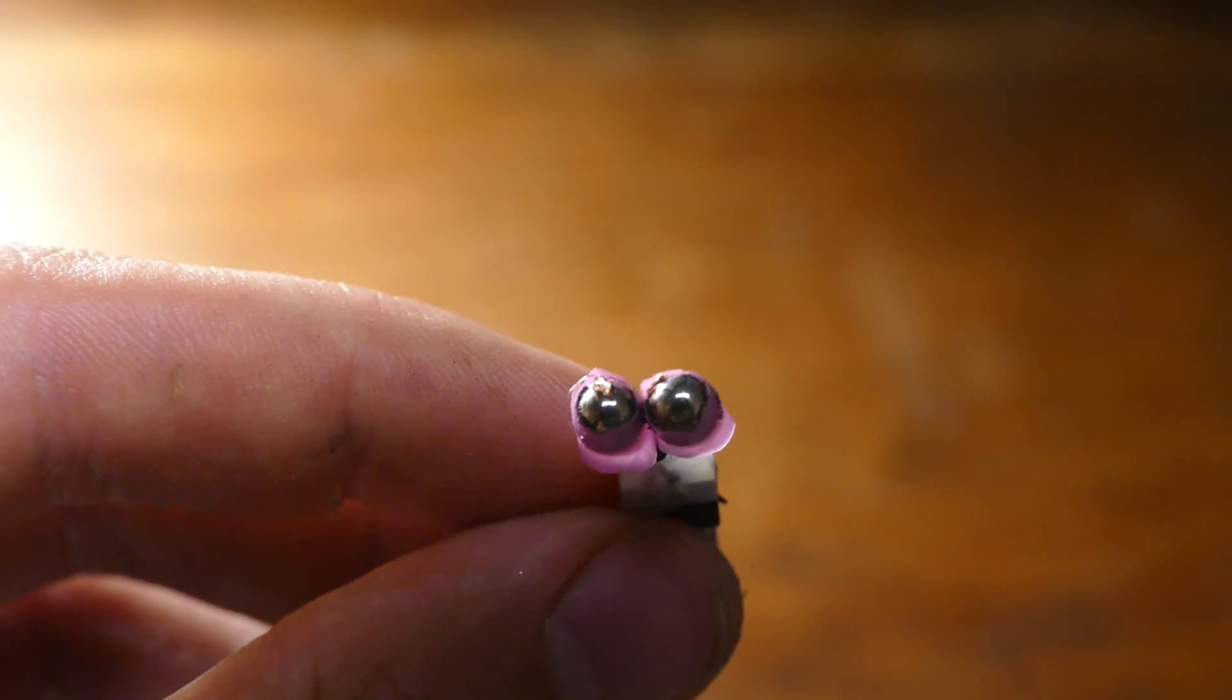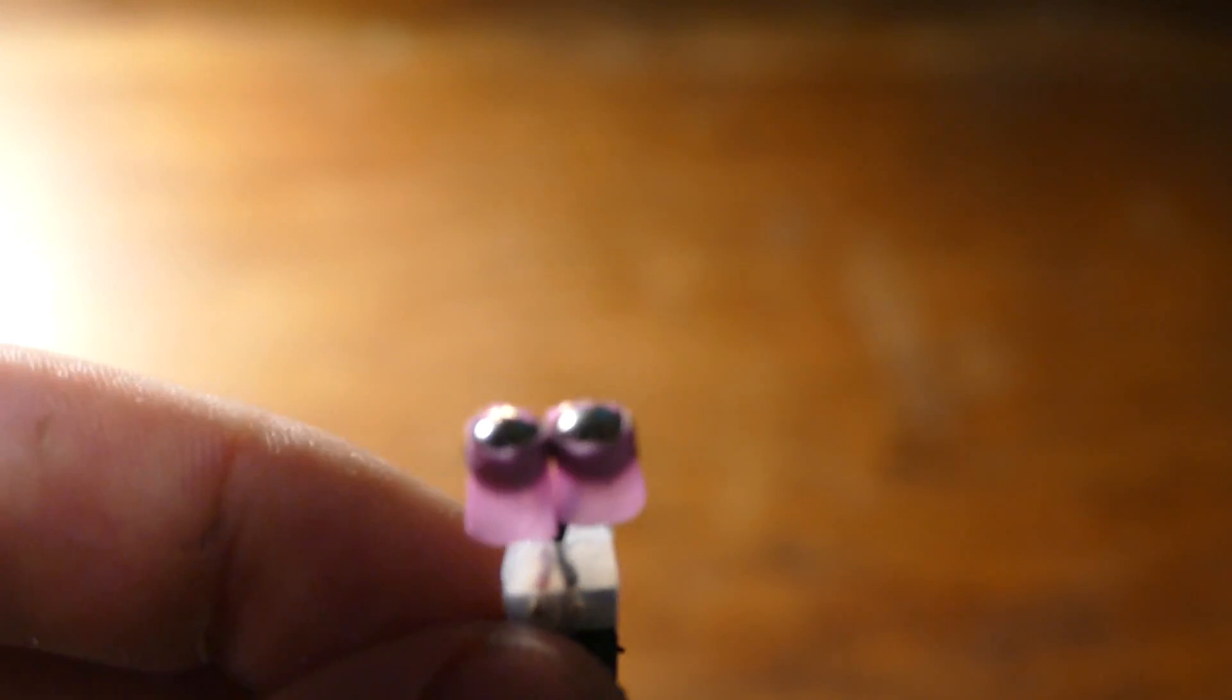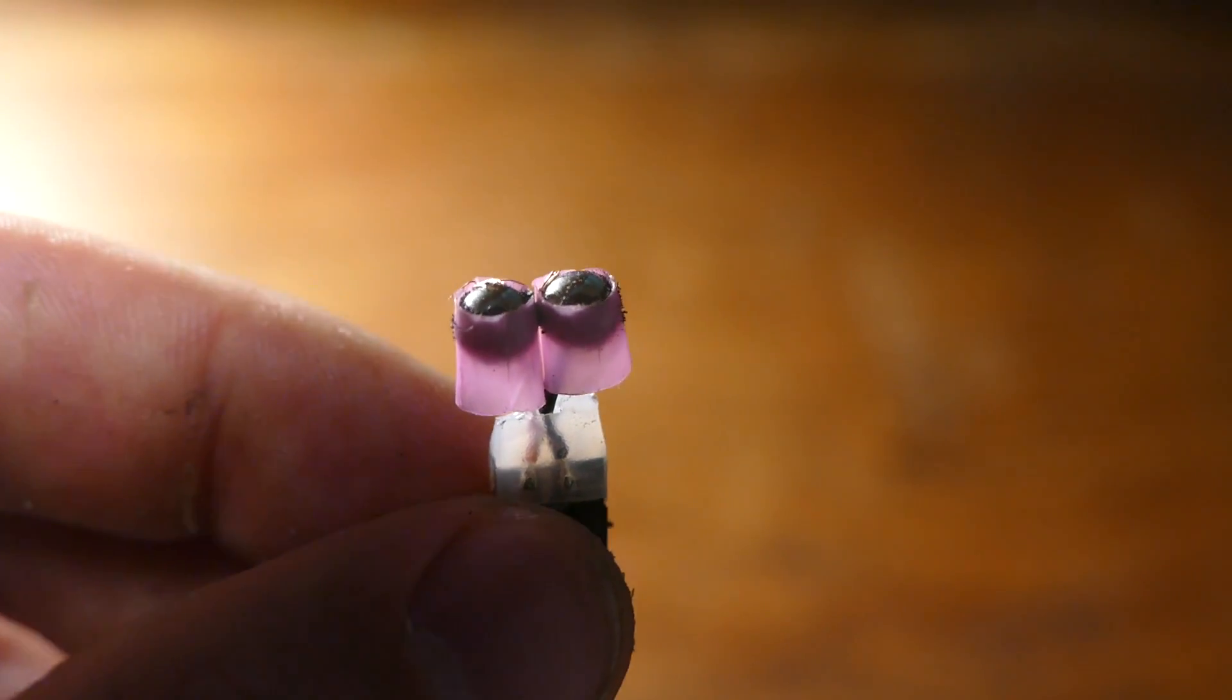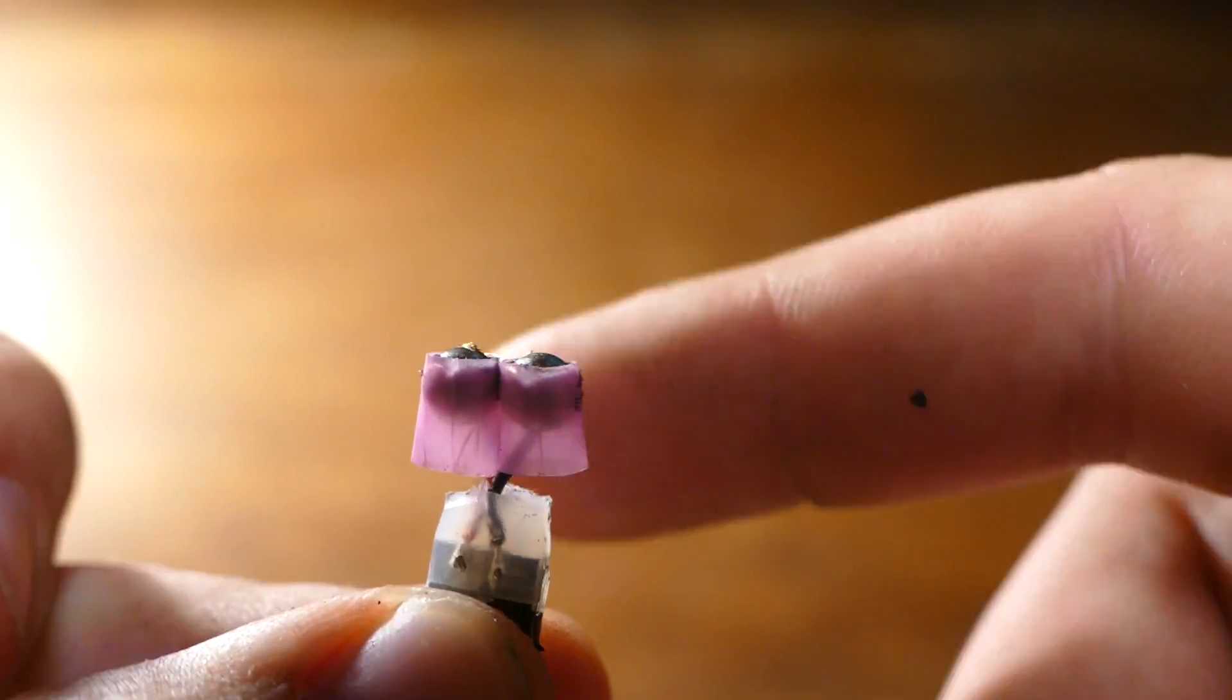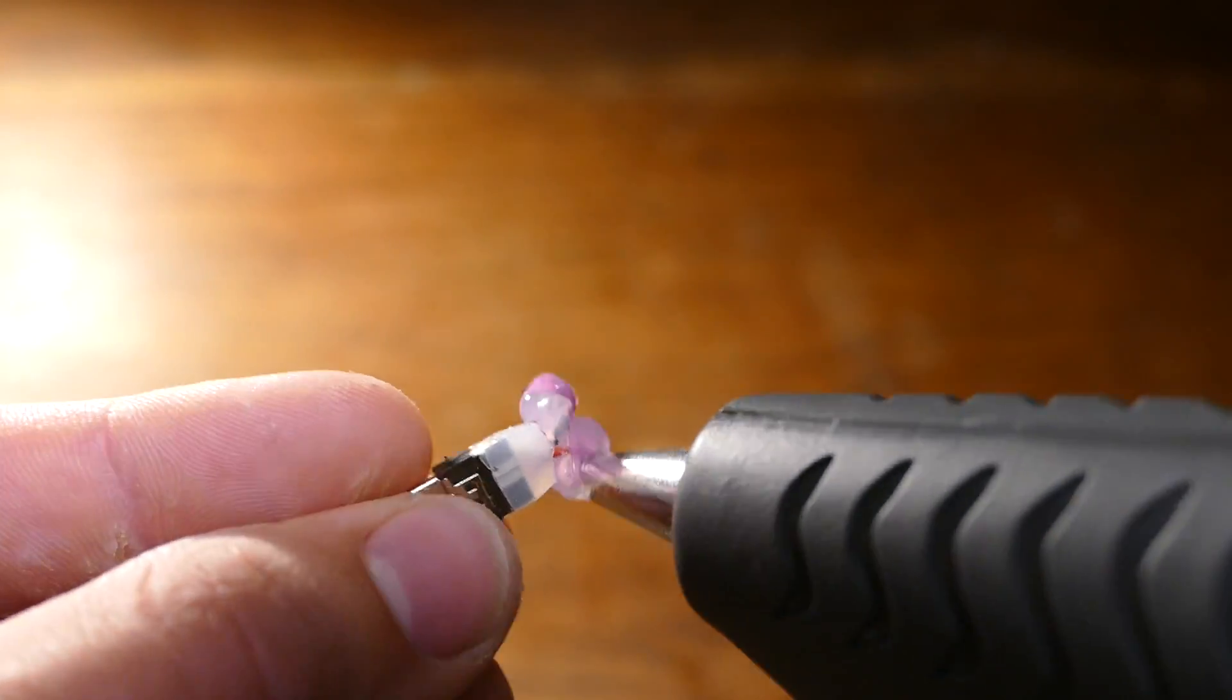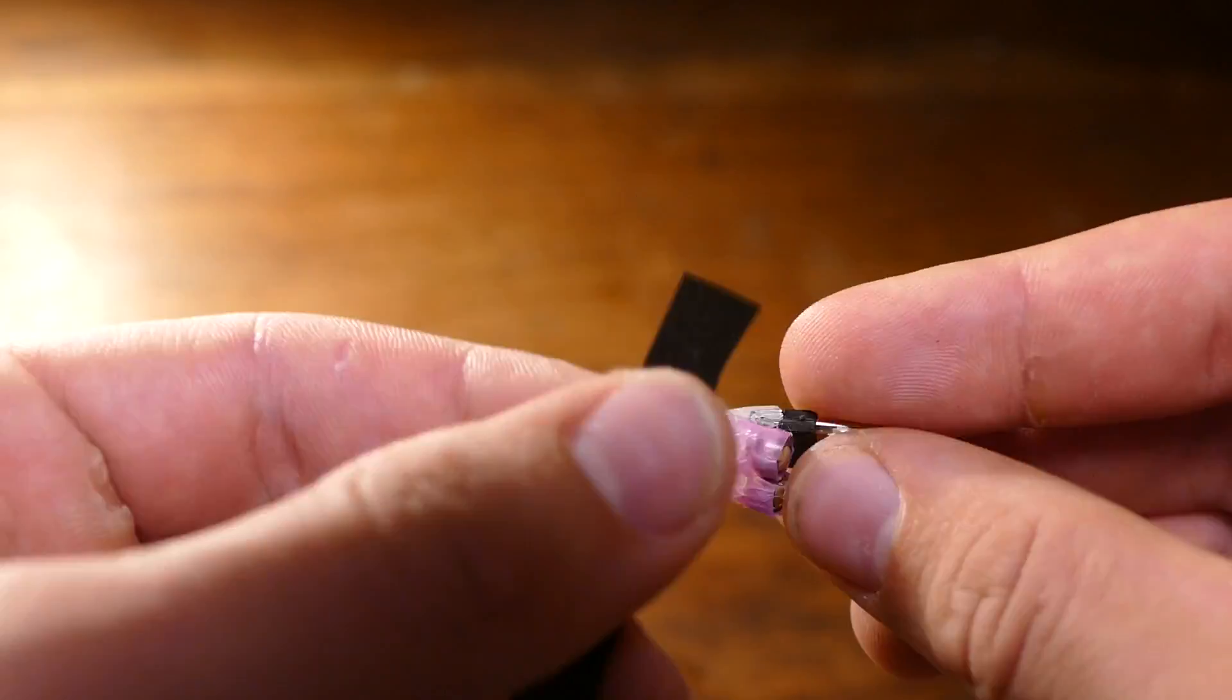You could try soldering the wires to the magnets but that might damage the magnets because heat will do that to magnets. You should be left with two magnets side by side separated by straws. Now fill up the gaps with hot glue and wrap some tape around it to secure it like this.